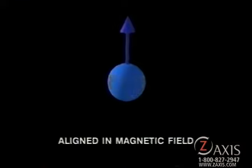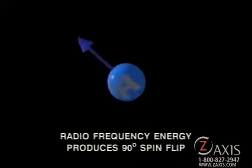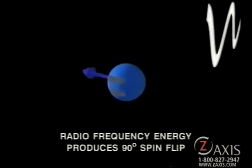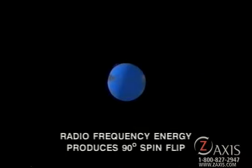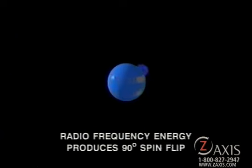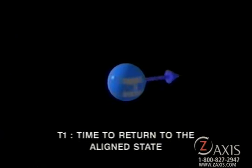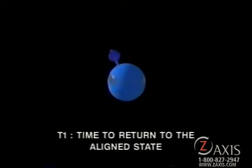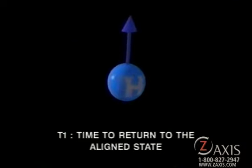Exposing these aligned and spinning protons to a pulse of radiofrequency or RF energy causes them to spin 90 degrees away from the original axis in a process called spin-flipping. The T1 time is simply the time that it takes for the proton to return to alignment with the external magnetic field. It turns out that the T1 time is dependent on the type and condition of the tissue that contains the protons.